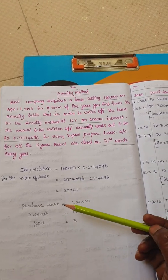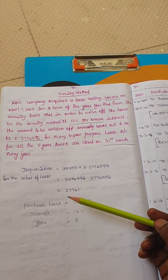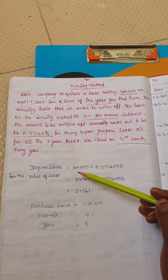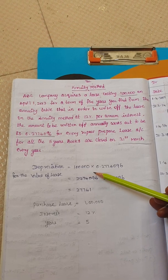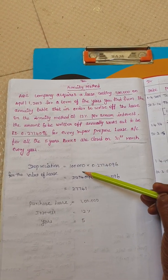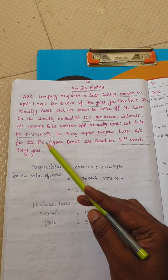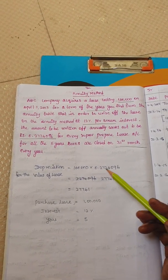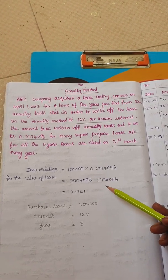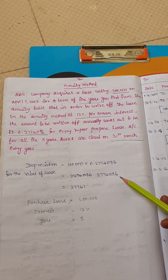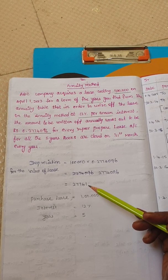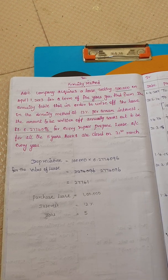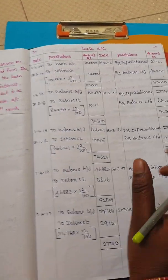In this sum, depreciation per annum — for one year, how do we do it? Depreciation equals the lease value multiplied by the annuity table amount. Lease value is 1 lakh. The annuity table amount is 0.2774. If you multiply this, it comes to 27,740.96, so rounded off it is 27,741. So the depreciation amount for 1 year is 27,741.